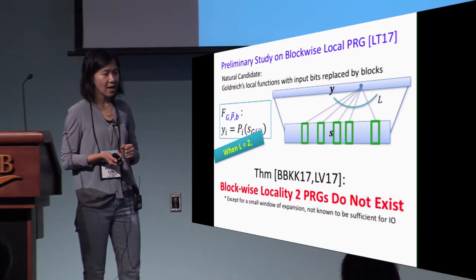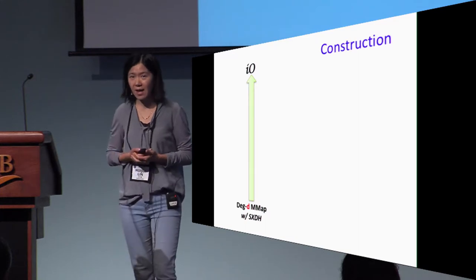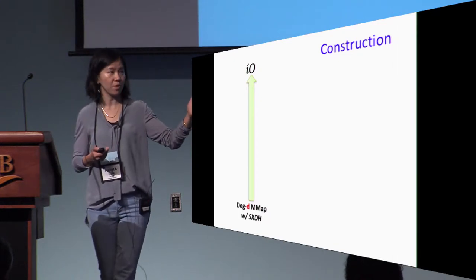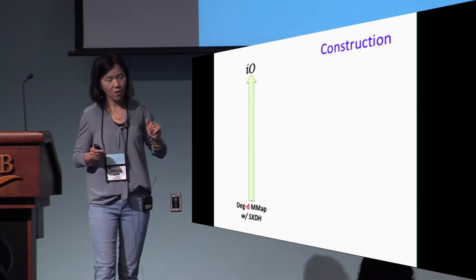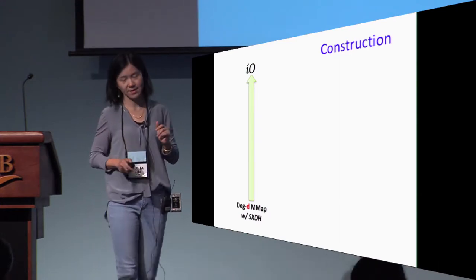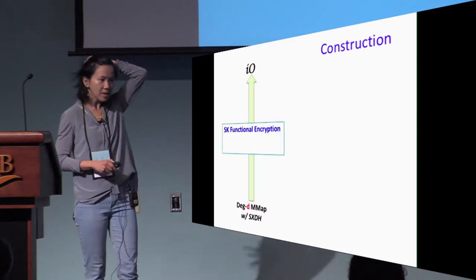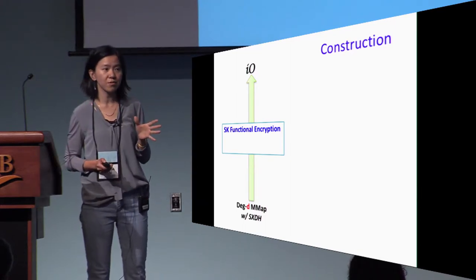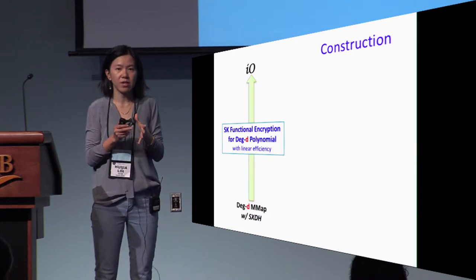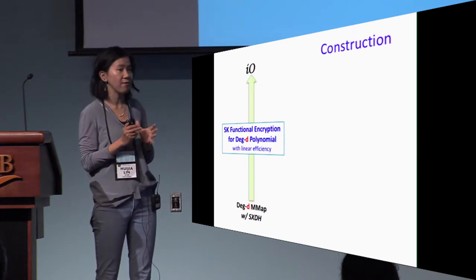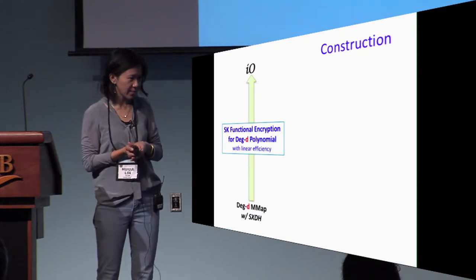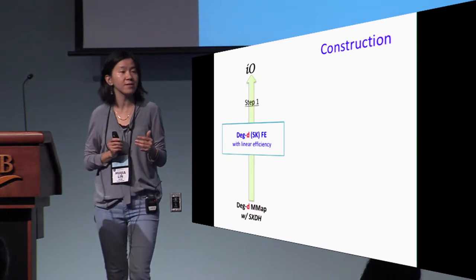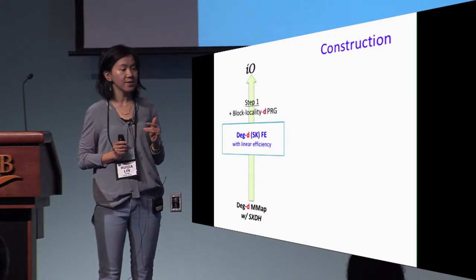In the rest of the talk, I will focus on giving you an idea of how we can construct IO from this very low-degree multilinear map with the help of those block local PRGs. I will only be able to give you some flavor or high-level idea of how this is done. In order to do so, we will need to use an intermediate object, which is secret key functional encryption for computing this very simple computation of only degree D polynomials. We will need this scheme to have very good efficiency. For short, I'll call them degree D FE. Therefore, in the first step, we want to bootstrap from degree D FE all the way to IO. This is the place where we need the help of those PRGs.